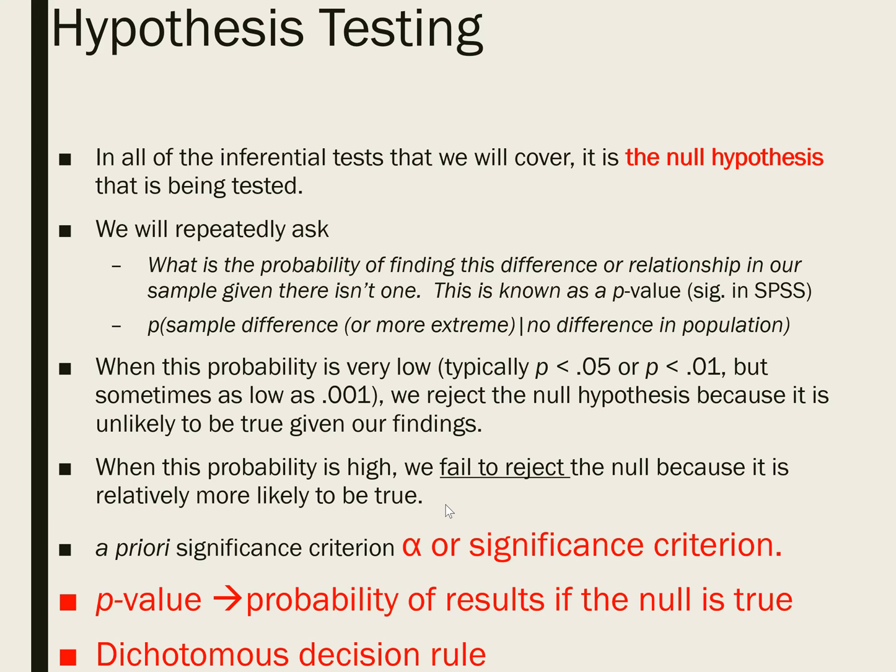The cutoff that a researcher would use is often symbolized by alpha, and it can be called a significance criterion. Researchers will often use a cutoff to determine how low the p-value must be in order to reject the null. If the p-value is below alpha — the cutoff, the significance criterion — then the researcher will declare what is sometimes called statistical significance and basically say that there's evidence in the data for a difference or a relationship. If the p-value is greater than alpha, the researcher will say that there is not a statistically significant difference or relationship between the variables.